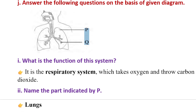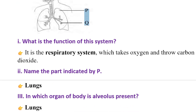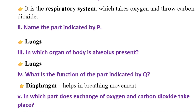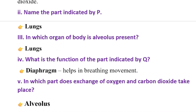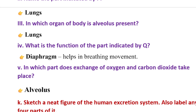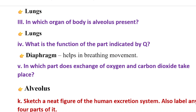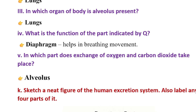Question: What is the function of this system? It is the respiratory system, which takes in oxygen and expels carbon dioxide. Name the part indicated by P. What is the function of the part indicated by Q? The exchange of oxygen and carbon dioxide takes place in the alveolus.